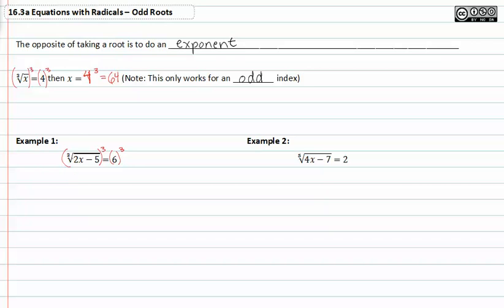When we do that, the cube root goes away because we're performing the opposite operation, and we get two x minus five is equal to six to the third or 216. At this point it's very easy to solve for x.